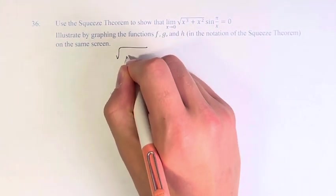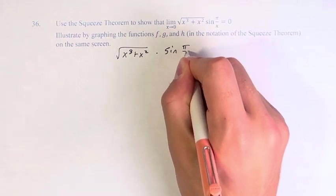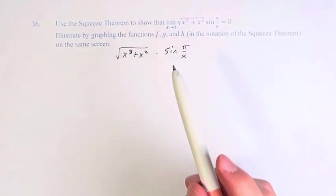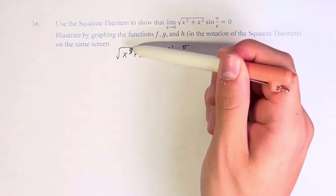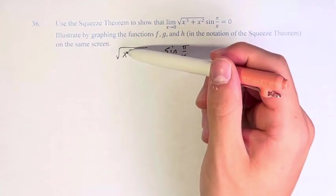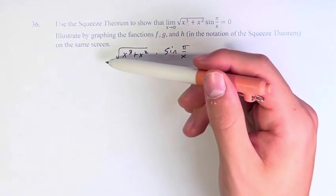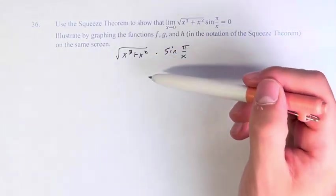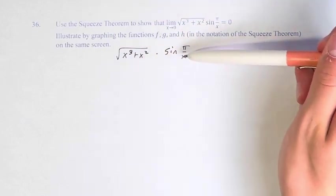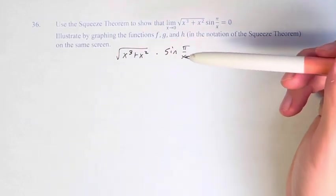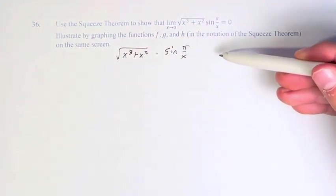For our function, the square root of x cubed plus x squared times the sine of pi over x, the values of part of the function we don't really need to know. It might go off to infinity or negative infinity, but it doesn't really matter. What matters is that we have sine here, and sine with anything inside of it balances between the values of negative 1 and 1.